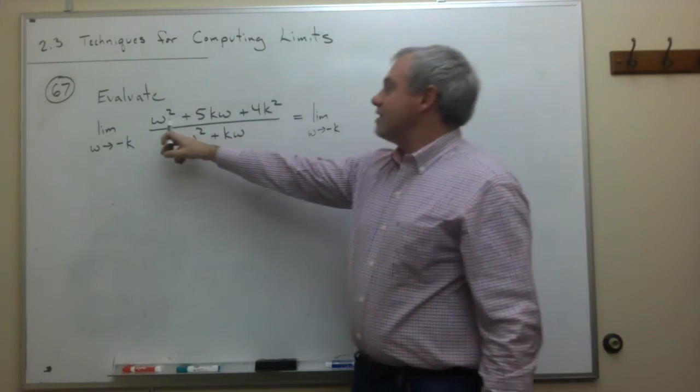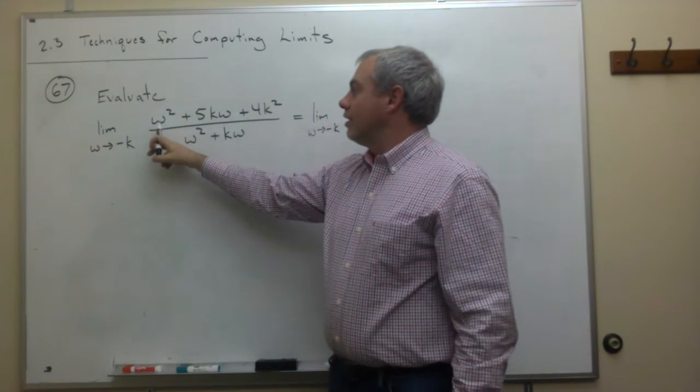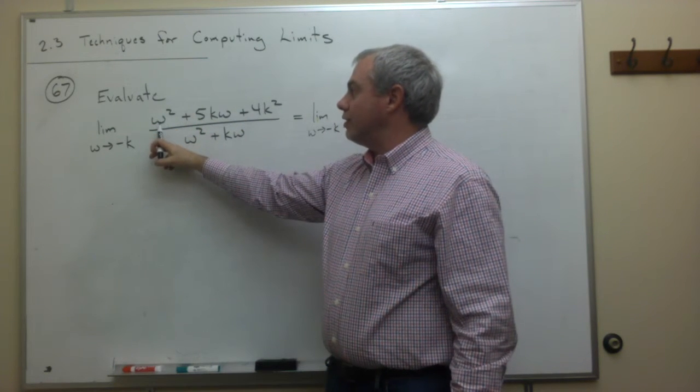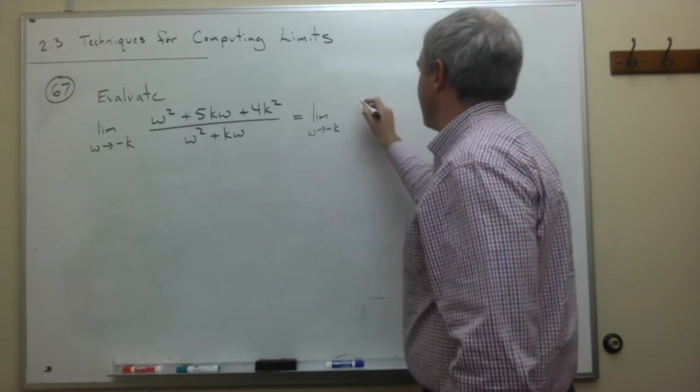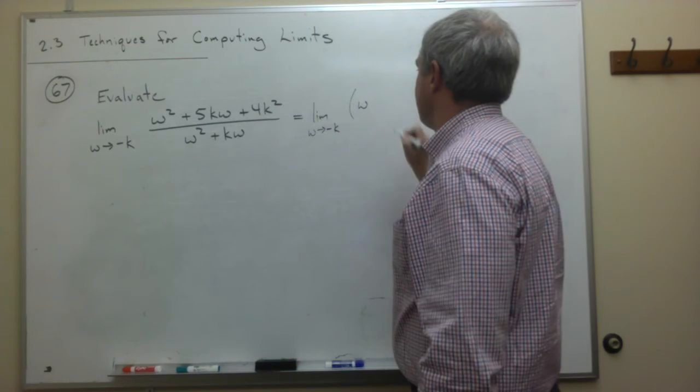And right off the bat, what we see is if this thing's going to factor, then it's going to have two factors. The first one's going to start with a w and the second one is because they multiply to give me a w squared.